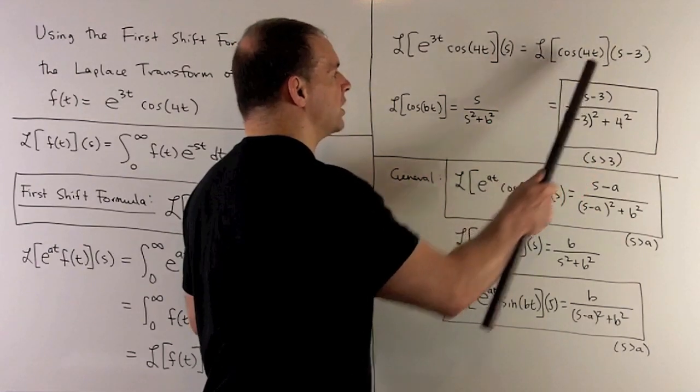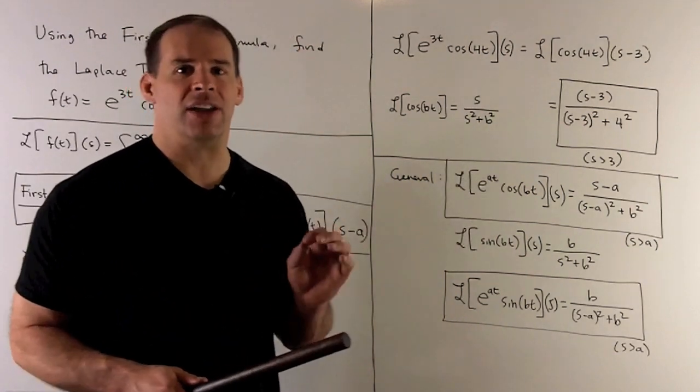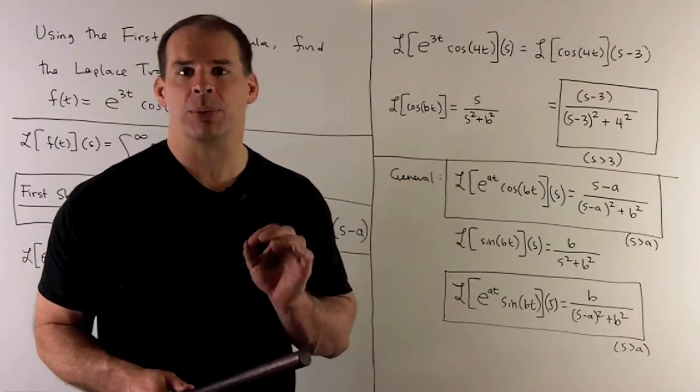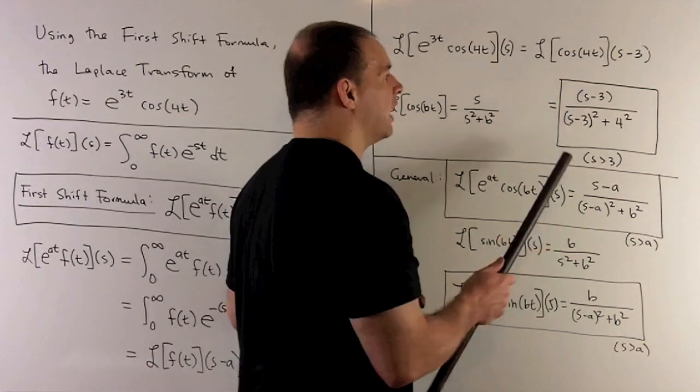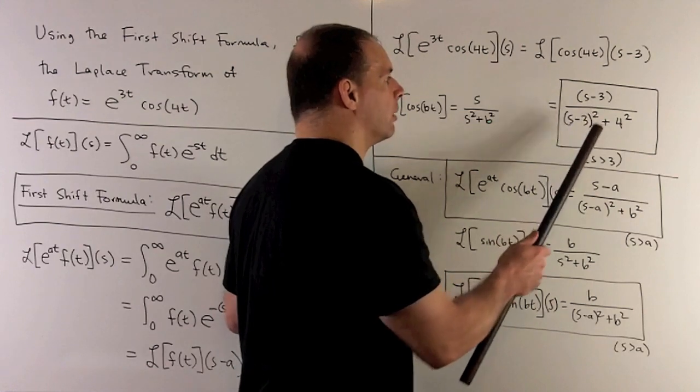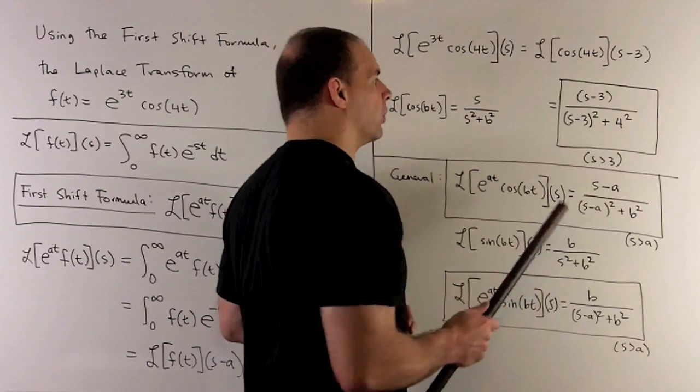The Laplace transform of cosine(4t) is s over s² plus 16. Then we do our shift: wherever we have an s, we put s minus 3. So our Laplace transform is (s-3) over (s-3)² plus 16, and the domain is s greater than 3.